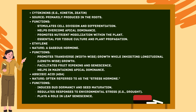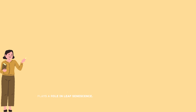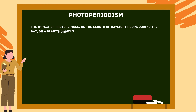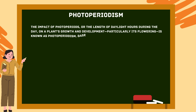Abscisic acid (ABA) is often referred to as the stress hormone. Its functions include inducing bud dormancy and seed maturation, regulating responses to environmental stress such as drought, and playing a role in leaf senescence. Photoperiodism refers to the impact of photoperiods — the length of daylight hours — on a plant's growth and development, particularly its flowering.